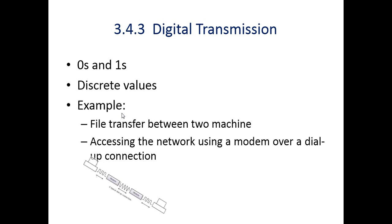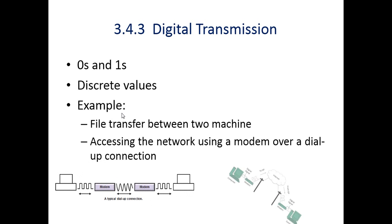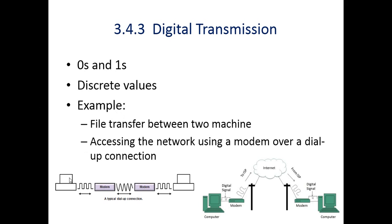Another example is accessing the network using a modem over a dial-up connection. Note that the modem is an analog device. On the sender side, there is a computer system, and whatever data is transferred is in digital form. When the sender sends data, it is in digital format. The modem converts the digital data into analog signaling and transfers the data to the receiver. At the receiver side, there is again a modem which converts the analog data back into digital data.